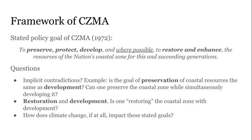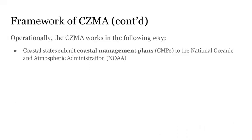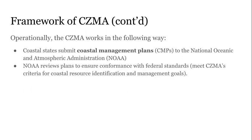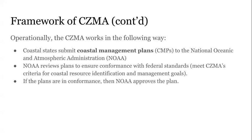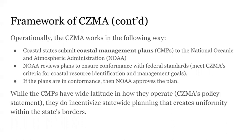Operationally, the CZMA works in the following way. Coastal states submit coastal management plans, or CMPs, to the National Oceanographic and Atmospheric Administration — NOAA. If you choose to participate — and almost every coastal state has, though Alaska has pulled out in the past five or ten years — you submit a coastal management plan. NOAA reviews those plans to ensure they're in conformance with the CZMA's criteria for coastal resource identification. If the plans are in conformance, NOAA approves the plan. While the coastal management plans have wide latitude in how they operate, the CZMA's policy statement does incentivize statewide planning that creates uniformity within the state's borders.